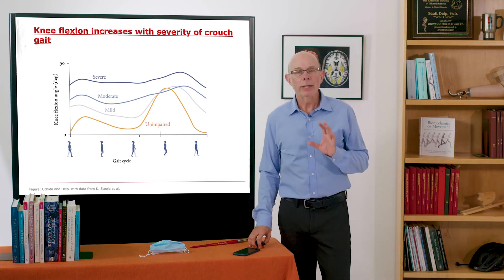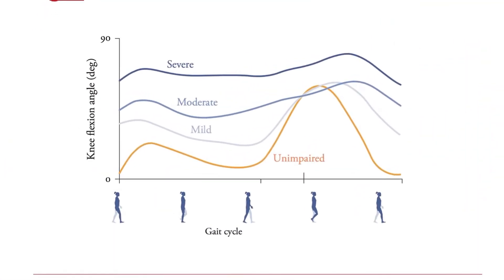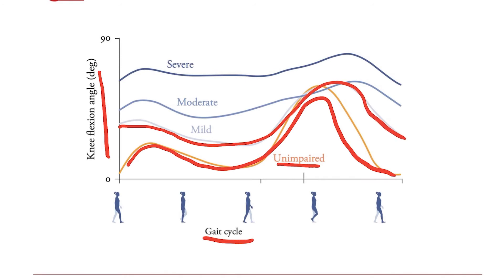Knee flexion increases with the severity of crouch. So what I'm showing here is simply the knee flexion angle versus crouch gait. Now in unimpaired walking, remember your knee flexes a little bit during the stance phase and then a lot during the swing phase. In a mild crouch, you're flexed just a little bit during the stance phase and you still get a lot of flexion during swing.